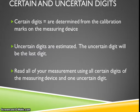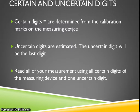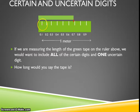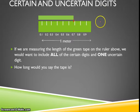Certain digits are anything identified on the measuring device itself; uncertain digits are estimated by the person using the device. The uncertain digit is the last digit written when you read your measurement. It's important to include all of the certain digits available on the device and then one uncertain digit. For example, when measuring the length of the green tape, we read 0.1, 0.2, 0.3, 0.4, 0.5, 0.6, 0.7 — so we know for certain the tape is at least 0.6 meters.